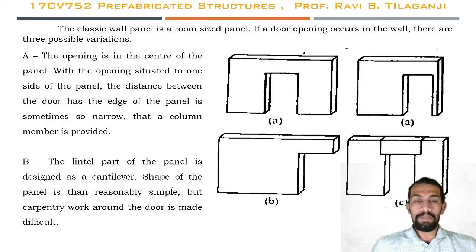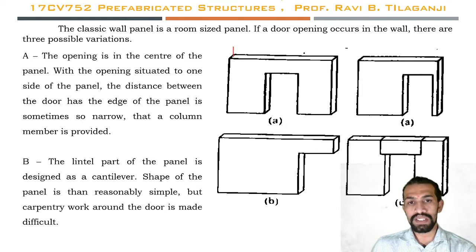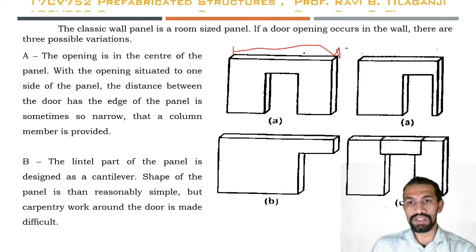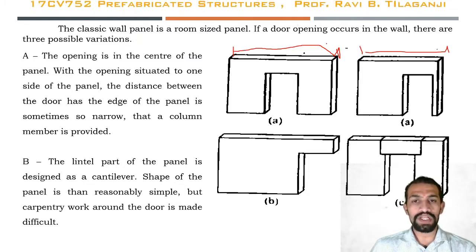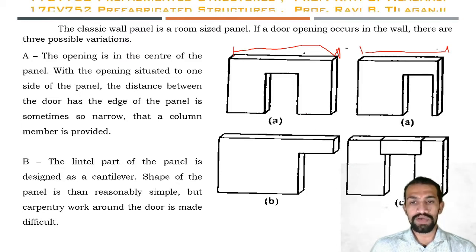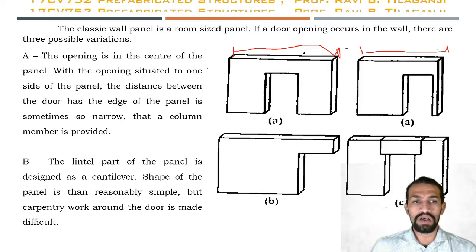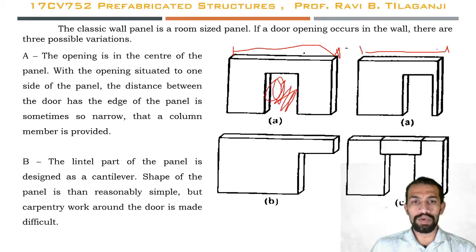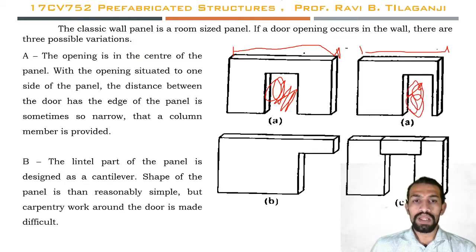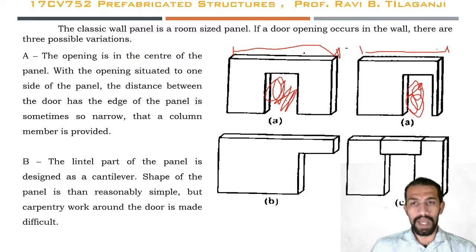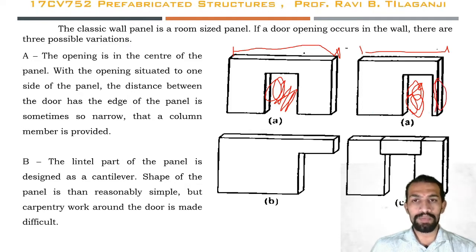The classic panel wall is a room-sized panel, meaning one single panel with the room-size width. If a door opening occurs in the wall, there are three possible variations. In the first two types, the opening is in the center of the panel, or the opening is situated at one side. When the opening is at one side, the distance between the door and the edge of the panel is sometimes so narrow that a column member is provided.